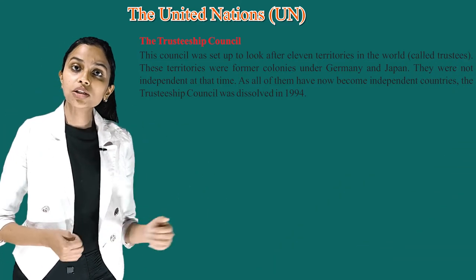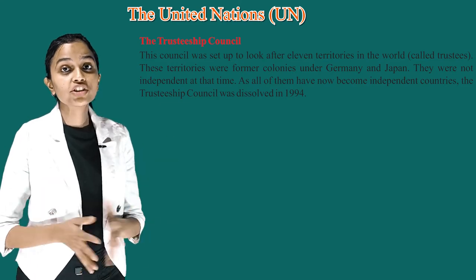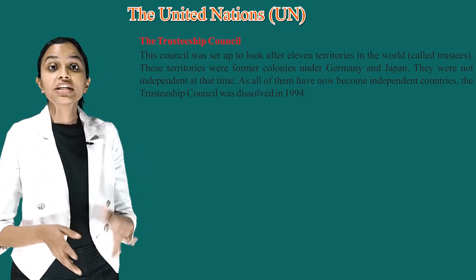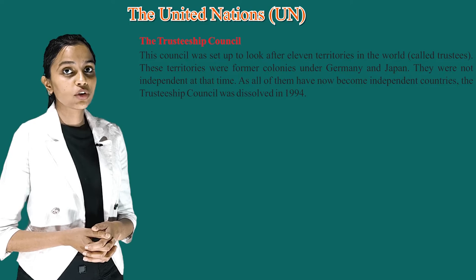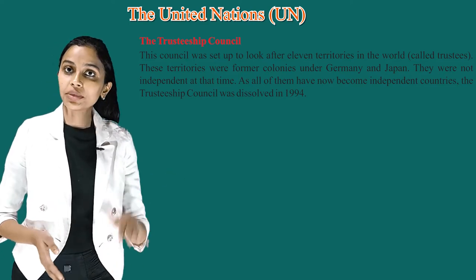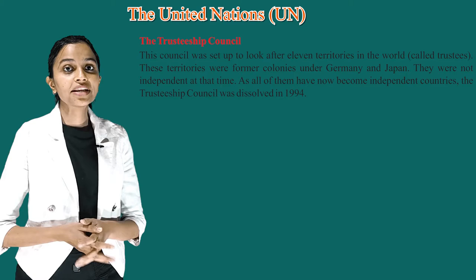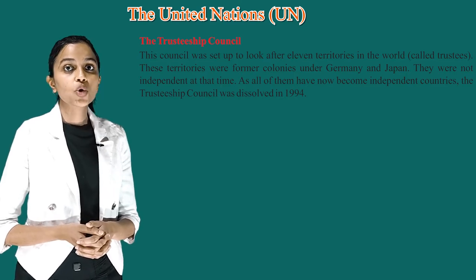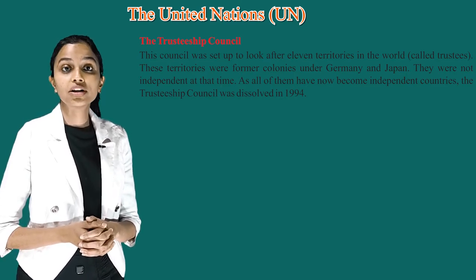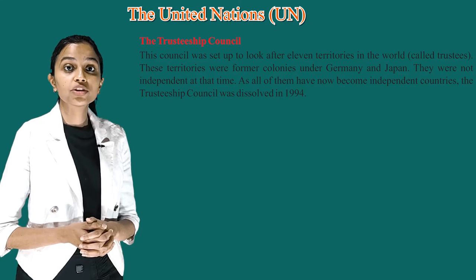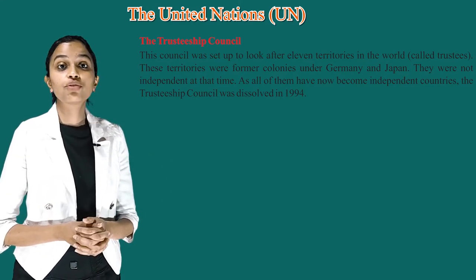The seventh is the Trusteeship Council. This council was set up to look after 11 territories in the world called trusteeships. These territories were former colonies under Germany and Japan and were not independent at that time. As all of them have now become independent countries, the Trusteeship Council was dissolved in 1994.